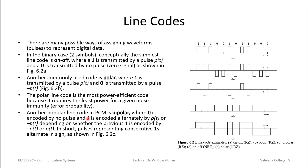Another popular line code is PCM bipolar, where zeros are encoded by no pulse, but the ones are encoded by alternating p(t) between positive and negative. It may be counterintuitive, but here's how it works: for a one, if the last one was positive, the next one flips negative. Zero is still the absence of any pulse. This is what we call a PCM bipolar code.